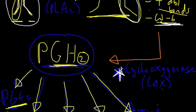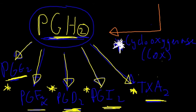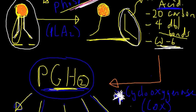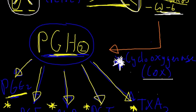...we have the conversion to PGH2, so our first prostaglandin from arachidonic acid using cyclooxygenase.